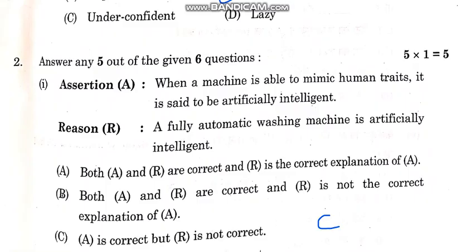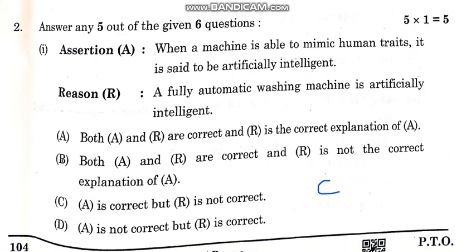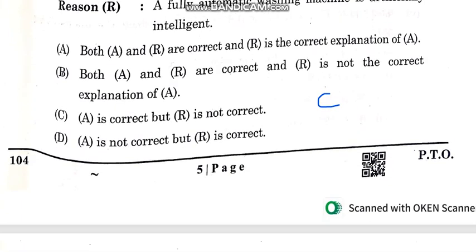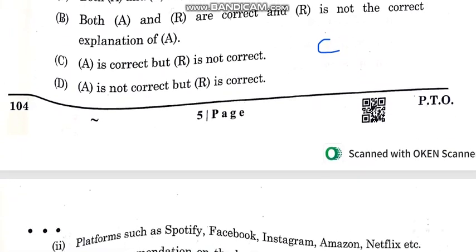The question is: any machine that is able to make different equipment is said to be artificial intelligence. This is correct. However, the reason given — fully automatic washing machine — is false. So the C option is correct.